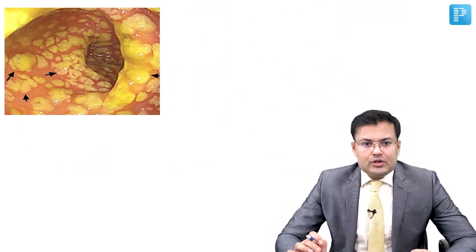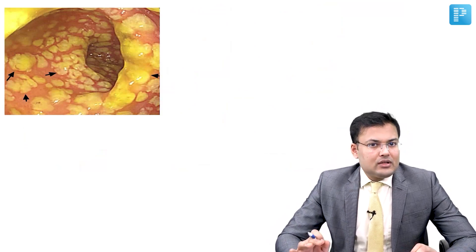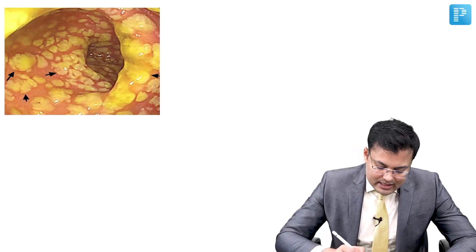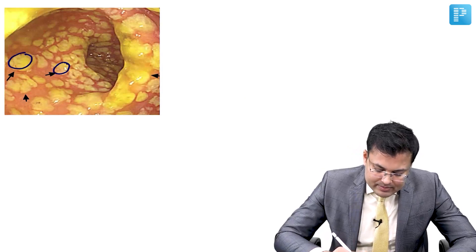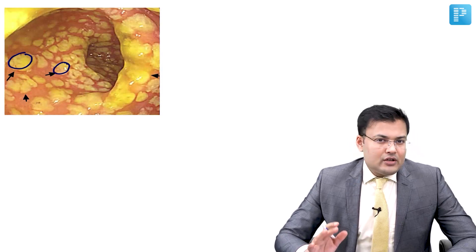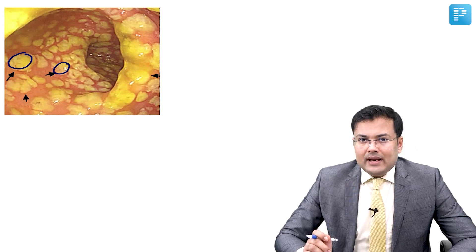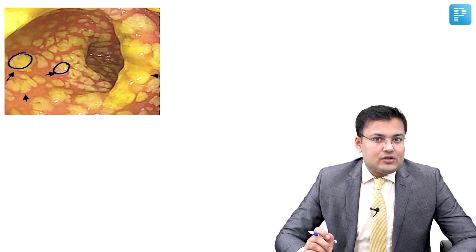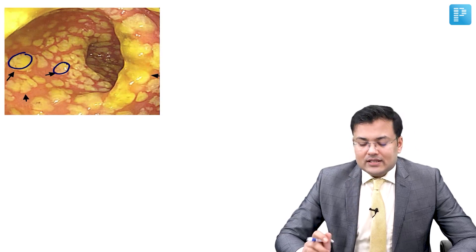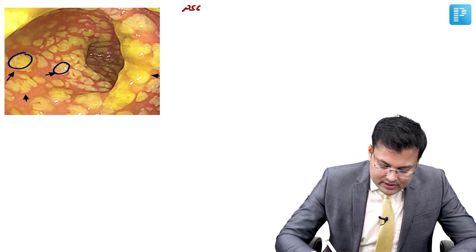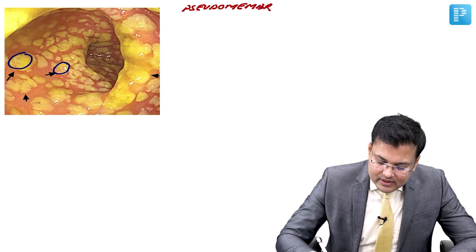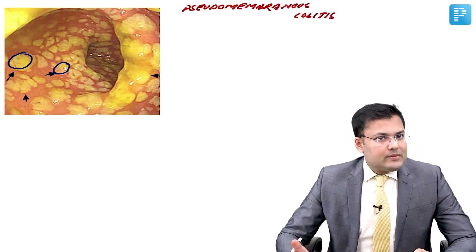In this colonoscopy picture, you can see that the colonic mucosa is edematous and there is presence of pseudomembrane. So there is inflammation of the colon with presence of pseudomembrane. The name of this condition is pseudomembranous colitis — a very important topic asked in pharmacology, microbiology, medicine, and surgery.